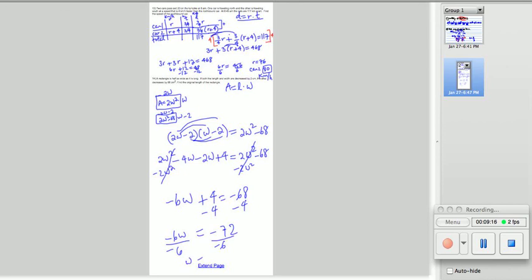Divide both sides by negative 6. That gives us W equals 12. Now, in the question it said, what is the original length and width. So, this is the original width. And the original length is 2W, which is 24. And it's centimeters, the units. OK.